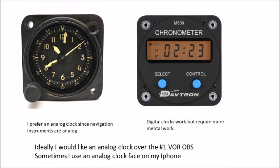Before I go further, let's talk about clocks. All airplanes are required to have a clock. The FAR used to require a clock with a sweep second hand, but that's now gone with digital clocks and chronometers. For these exercises I much prefer an analog sweep second hand clock because most of our navigation instruments are analog — there's some digital information, but most of the time we're looking for something that's physically moving.